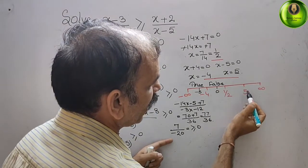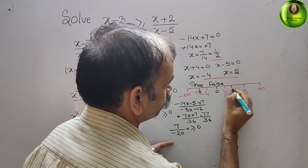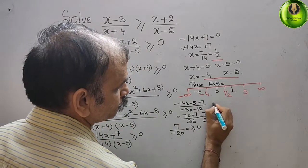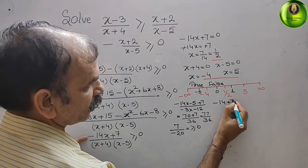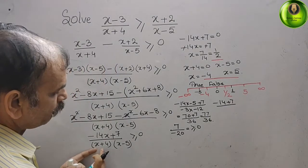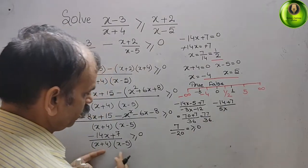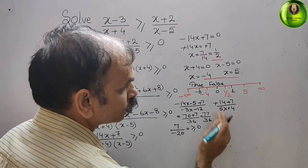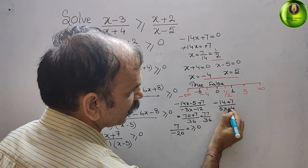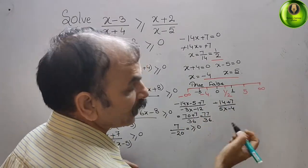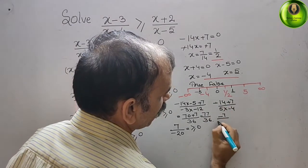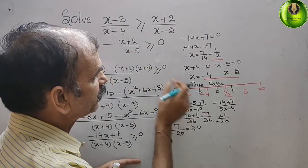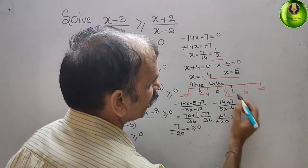Now between 1 by 2 and 5, we take x equals 1. Substituting: minus 14 into 1 is minus 14, plus 7 gives minus 7. Denominator: 1 plus 4 is 5, and 1 minus 5 is minus 4, so 5 into minus 4 is minus 20. Minus 7 by minus 20 — minus and minus cancel to give a positive number, which is greater than 0 — so this is TRUE.